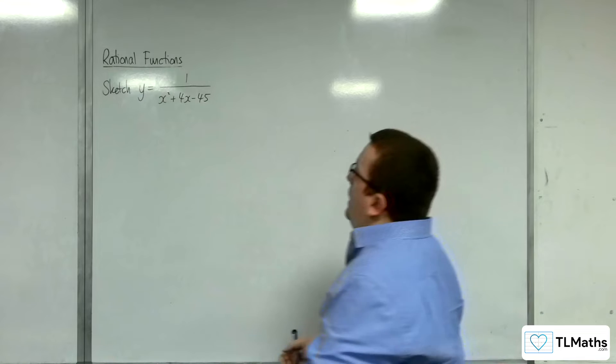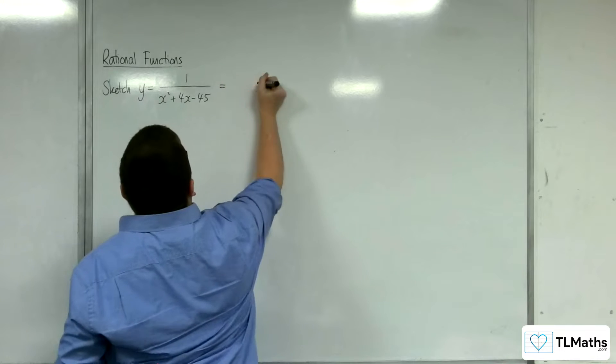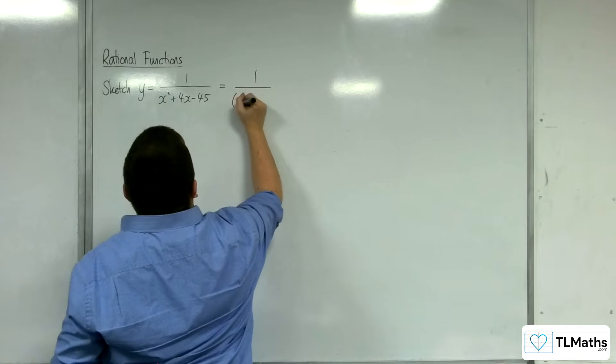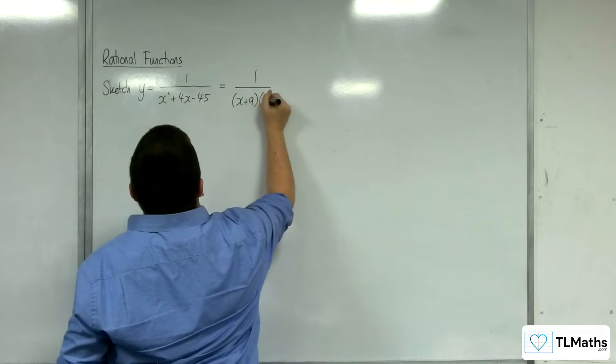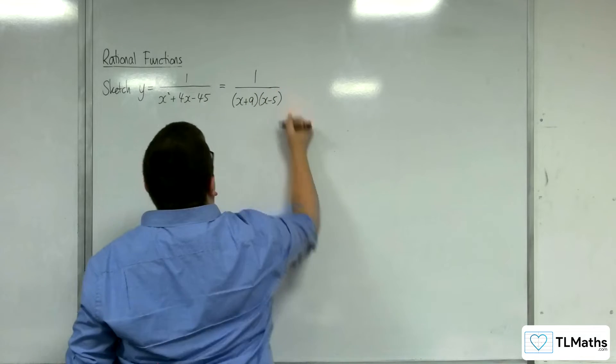So first thing we want to do is factorize that denominator. So that's 1 over, and that'll be x plus 9 times x minus 5.